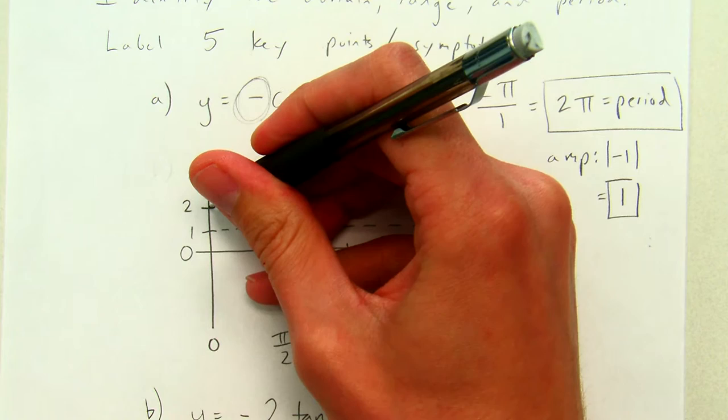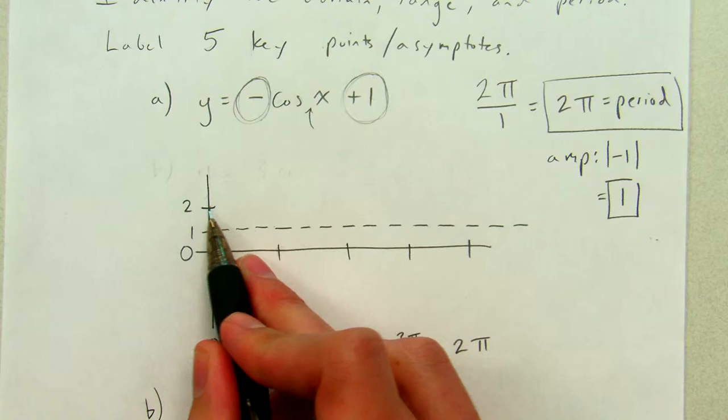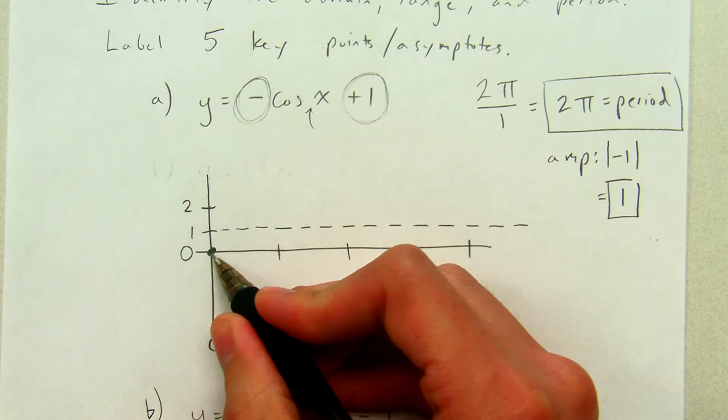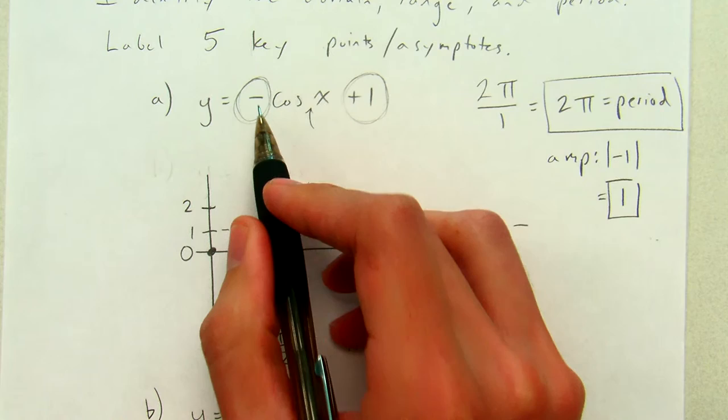Now, cosine normally starts above the midline, right? Y equals cosine x normally starts up here and then goes down, down, up, up. But, it's been reflected. So, instead of starting up here, that maximum point reflects over the midline, and it starts down here. And instead of going down, down, up, up, like I normally do for cosine, I'm going to go up, up, down, down.